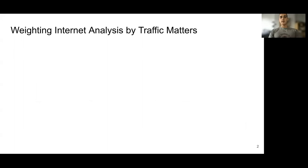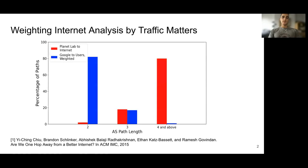Weighting our analysis of the internet matters. As an example, consider this figure from a 2015 IMC paper. It shows AS path lengths for different source-destination pairs. The red box highlights that when measuring from PlanetLab nodes to random prefixes, only 2% of paths had an AS path length of 2 or less.